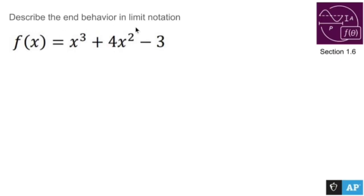Describe the end behavior in limit notation. What I have here is x to the third is my largest term here, and I have nothing in front of x to the third, which means I have a regular old cubic.